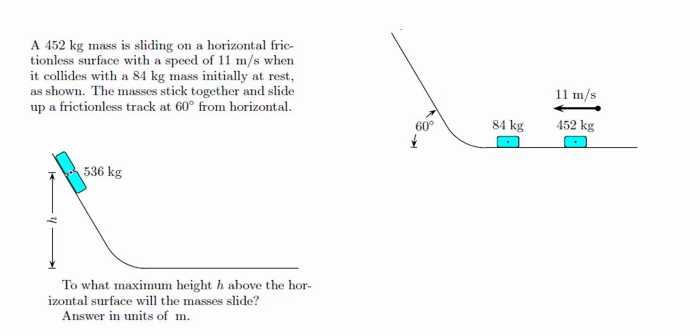In this problem, we have a block that's sliding to the left along a frictionless surface, and it's going to hit and stick together with another block. After those two blocks stick together, they're going to slide up a ramp. Because the two masses stick together, what we have here is a completely inelastic collision.